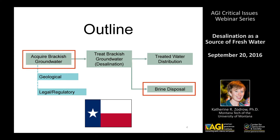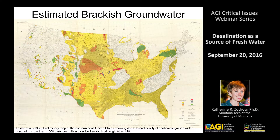I'll talk a little bit about brackish groundwater resources in the United States, but the focus of this talk is Texas, because water is regulated primarily at the state level in the United States and there are vast differences between states. We like to think of groundwater as a fresh, pristine resource, but many aquifers actually have pretty high salinity.